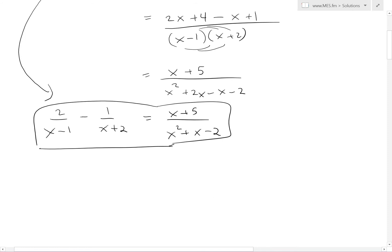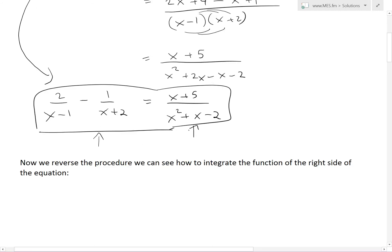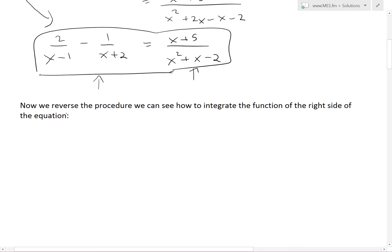So now what this means is now if we have an integral with this function, we could actually write it as this, so decompose it into this partial fraction. And we would do that because we know how to do the integral of this and this not necessarily. Basically, now if we reverse the procedure, we can see how to integrate the function on the right side of the equation. For example, if we had an integral of x plus 5 over x squared plus x minus 2 dx.